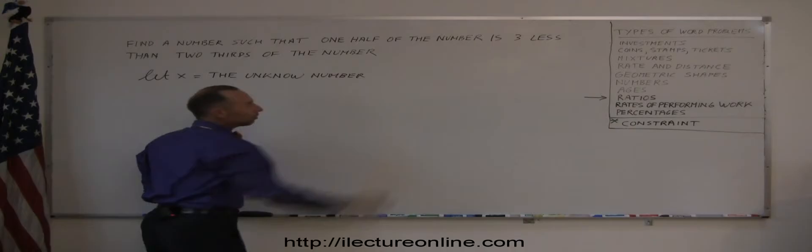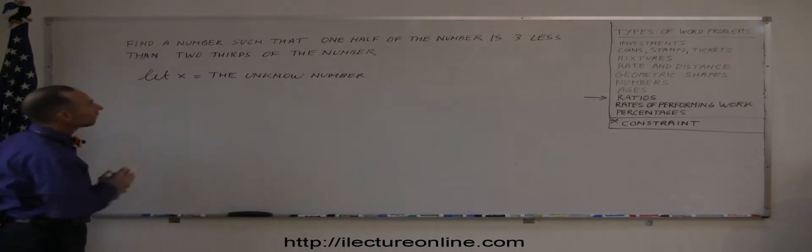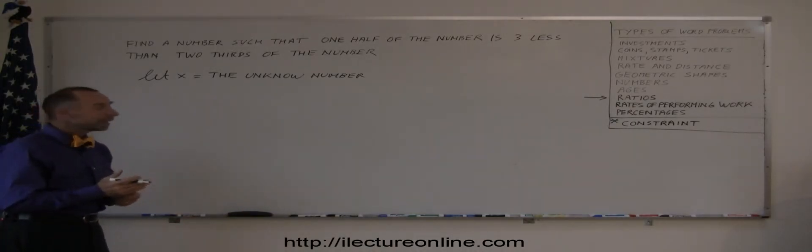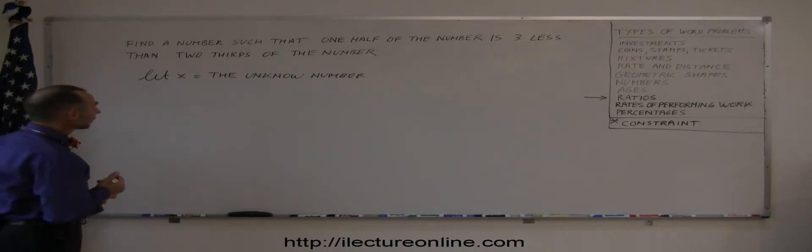So now we need the relationship, some sort of constraint with what's given, so we can set up an equation and help us solve the problem. So let's read it carefully and try to assemble this equation.